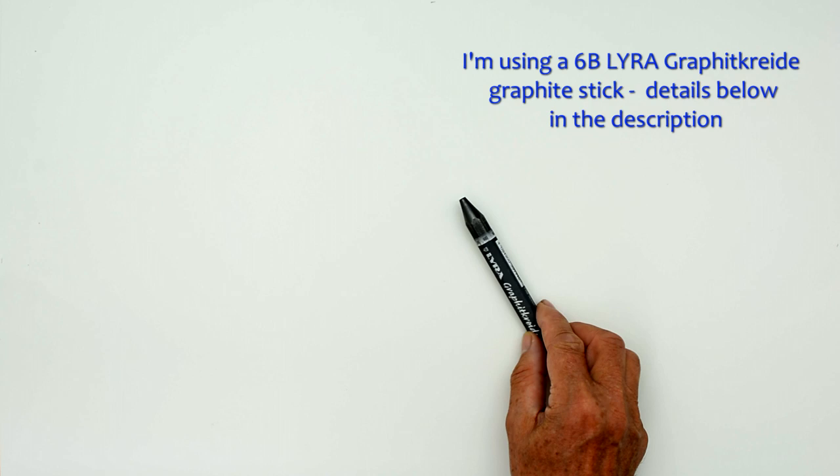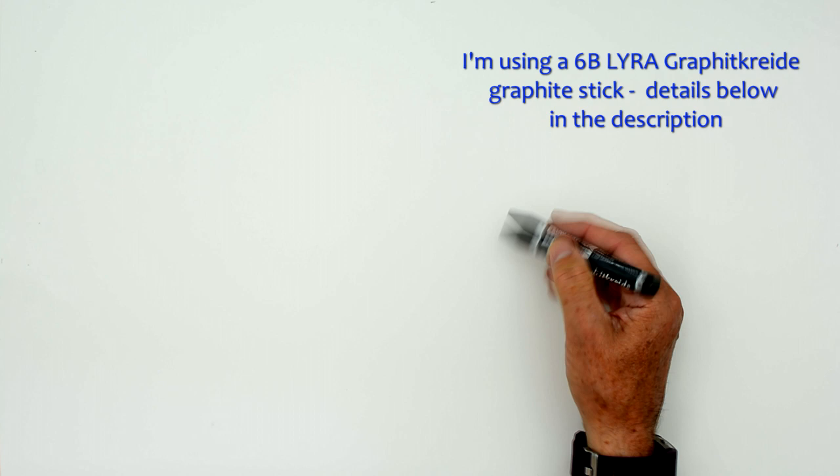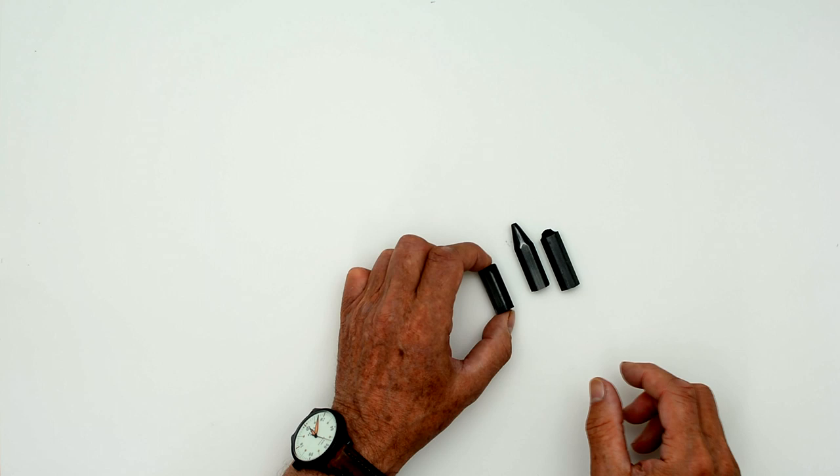Now we could use a pencil because a pencil contains graphite, but we don't want to use that. We want to use this, a graphite stick. You see a big lump of graphite, but we're not going to use it like most people do when they draw with it like a pencil. We're going to break it up into bits like this. You see small pieces.